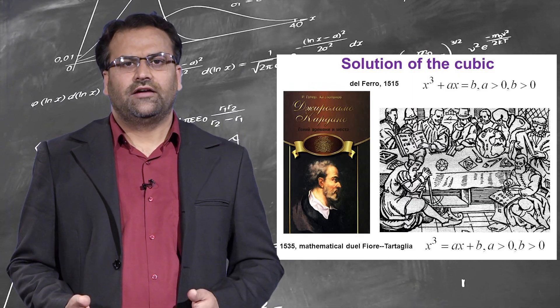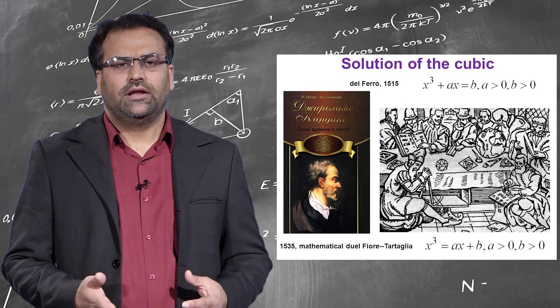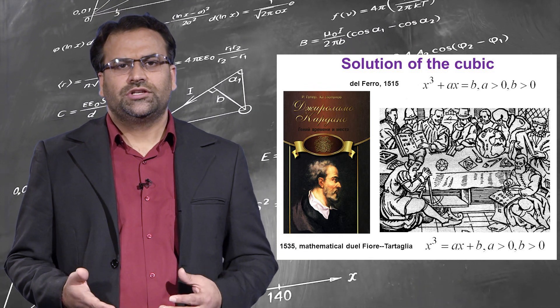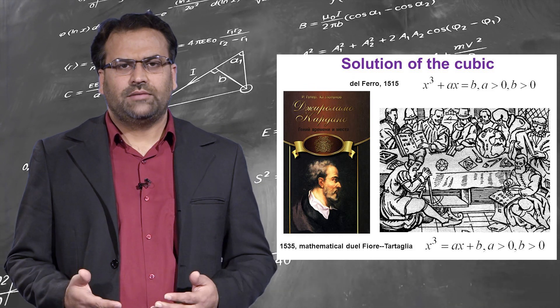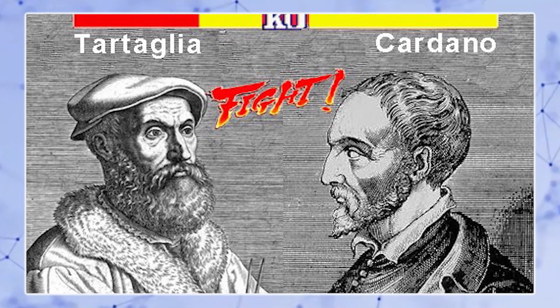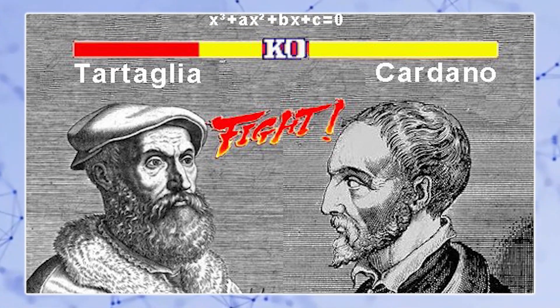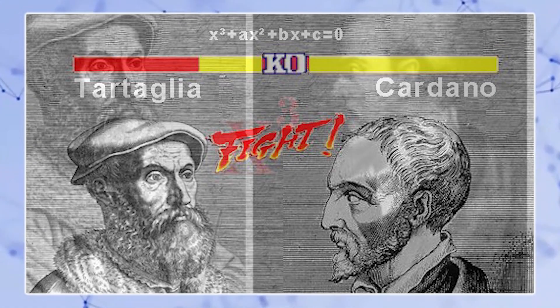In 1535, Fior challenged Tartaglia for a public competition, which Tartaglia accepted and won. The news of Tartaglia's famous victory over Fior reached Cardano, who was an influential mathematician of the day.